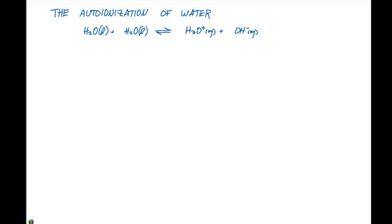Now that we've looked at relative acid-base strength, we need to come up with a convenient scale in order to express this. Before we get to that, let's talk about the auto-ionization of water.